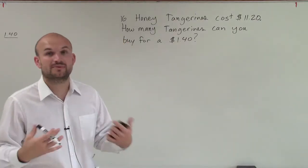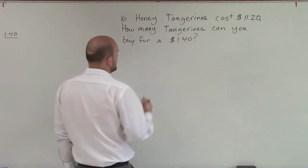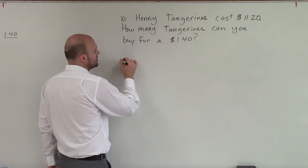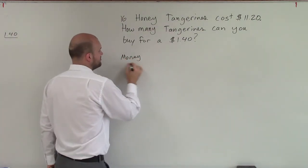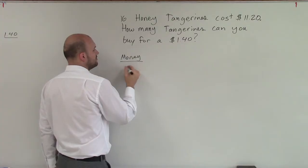So when having a problem like this, we need to set up a ratio. And what I'm talking about with our ratio is the amount of money that we have compared to how many we can buy.